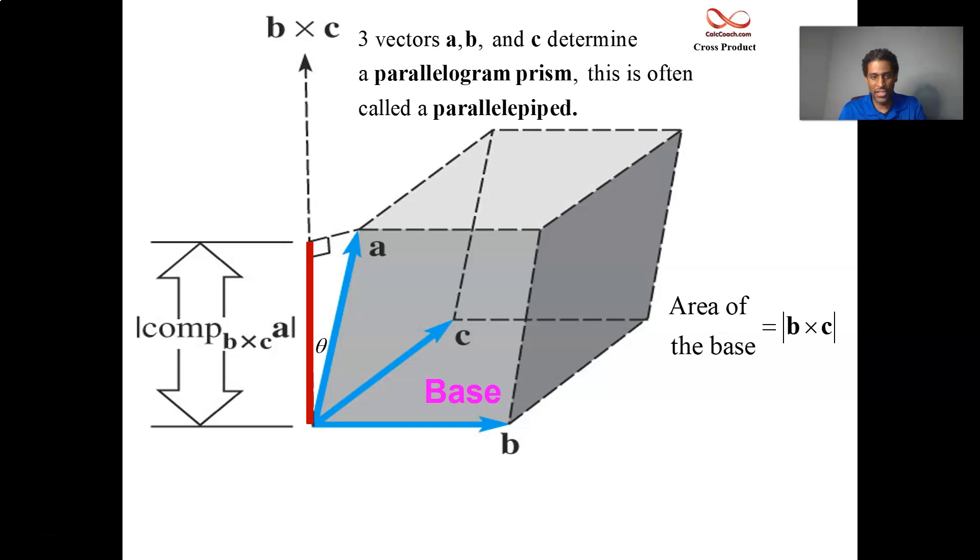You have these two vectors b and c. You cross them, you get a third vector who is orthogonal to both of them. That will be used to give you the height. That vector itself won't give you the height. You got to use the vector a and project onto that vector.